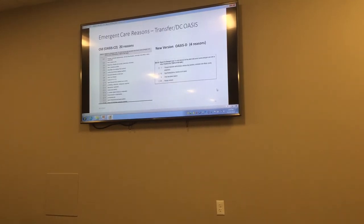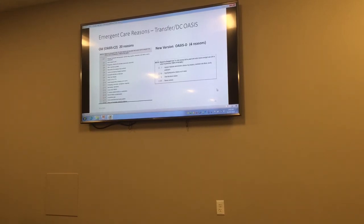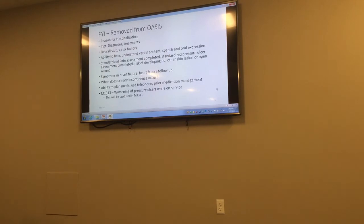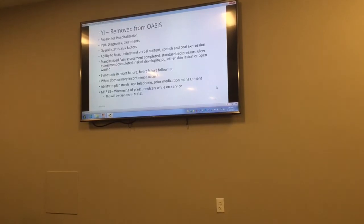For emergent care reasons, they're paring this down quite a bit — going from 20 reasons to four. They're keeping only the reasons that relate to potentially avoidable events. That's the only information they're going to be collecting on this one. And there's also a bunch of stuff they've removed from OASIS entirely, which is nice.